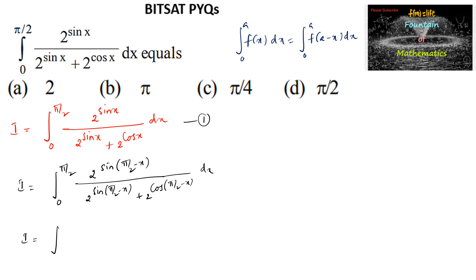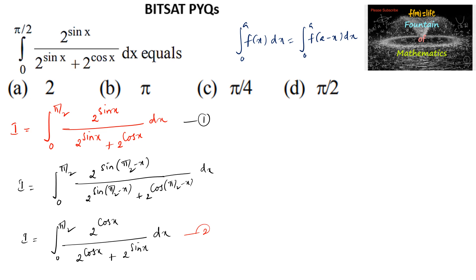Since sin(π/2 minus x) equals cos x, this becomes I equal to integral from 0 to π/2 of 2^(cos x) divided by (2^(cos x) plus 2^(sin x)) dx. Let us call this equation 2.